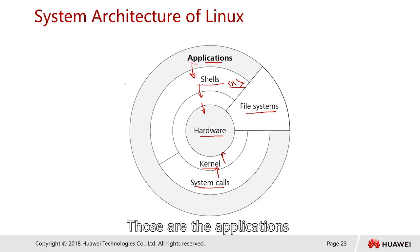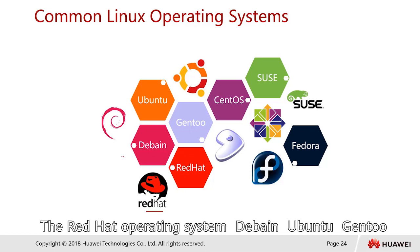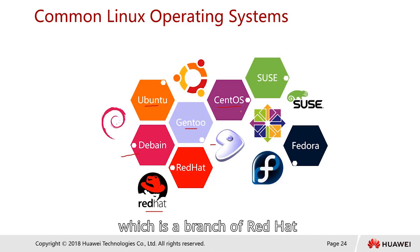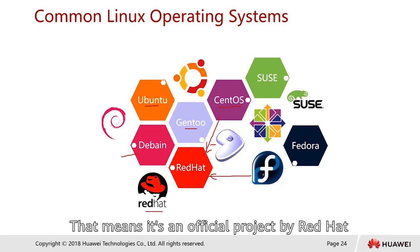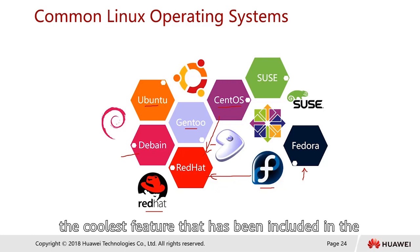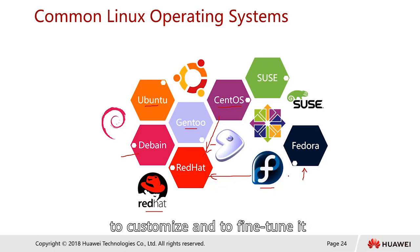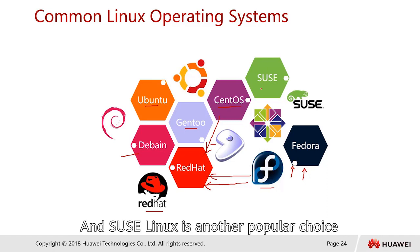Some of the common Linux operating systems include Red Hat, Debian, Ubuntu, Gentoo, and CentOS. Fedora is an official child project by Red Hat and is meant for testing the most cutting-edge features before they are incorporated into the main Red Hat operating system.